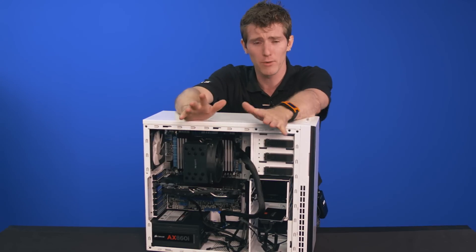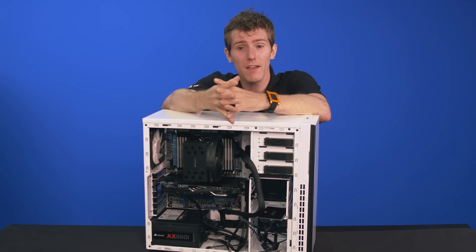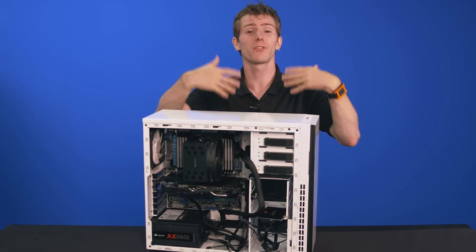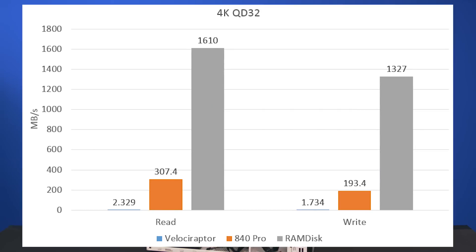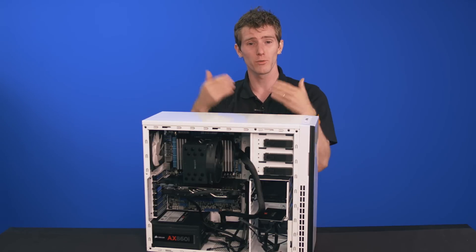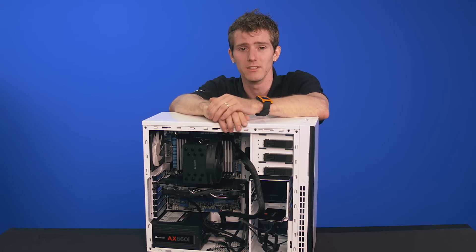I've talked a lot about how a RAM disk is faster than an SSD and faster than a hard drive, so without further ado, here are some actual numbers for this RAM disk versus a Velociraptor and versus an SSD. Remember how when SSDs came out, particularly random IOPS were huge and hard drives were just this little sliver on benchmark sites? That's what a RAM disk is to an SSD. It is freaking unreal, guys.